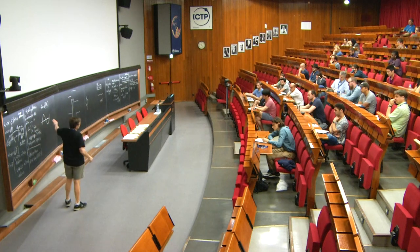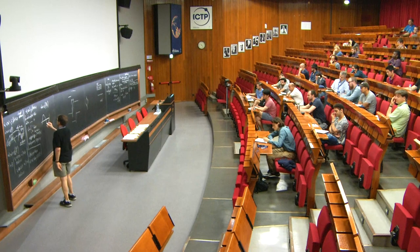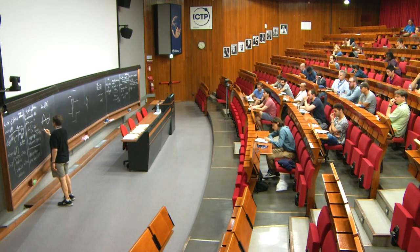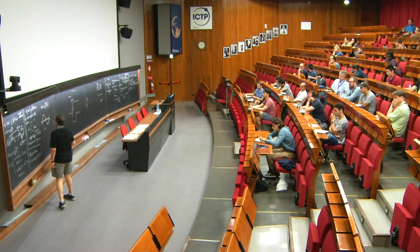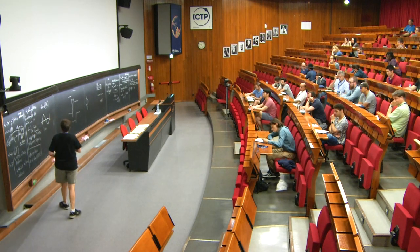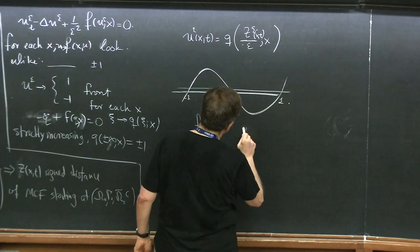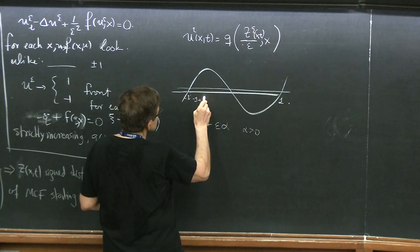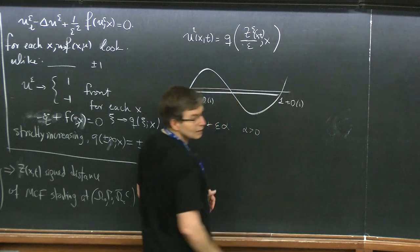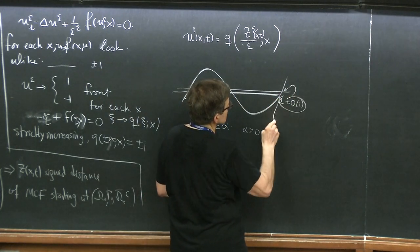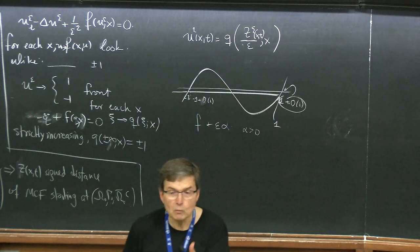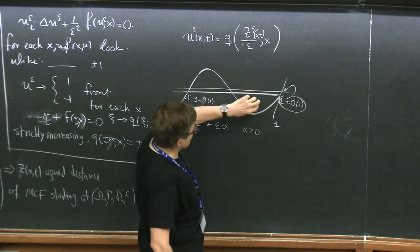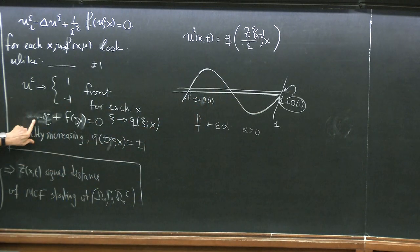Let's assume this is the correct nonlinearity — cubic with equal wells, normalized to plus one and minus one. What I do is I add a little bit to F — specifically, epsilon times alpha. If alpha is positive, the new equilibria will shift: minus one moves up slightly, and plus one moves down slightly. I moved them a little bit, which gives me some room to work.